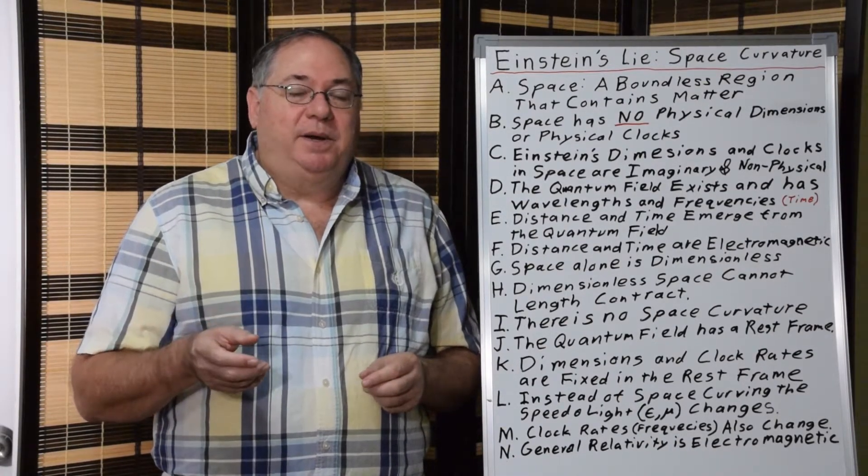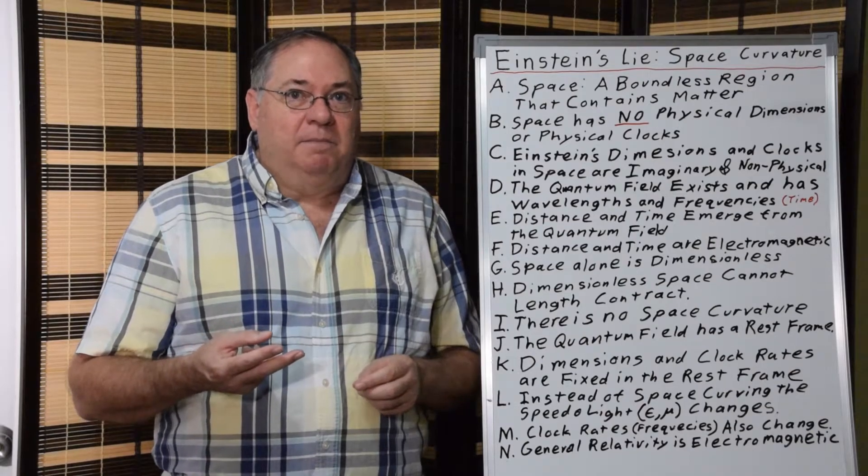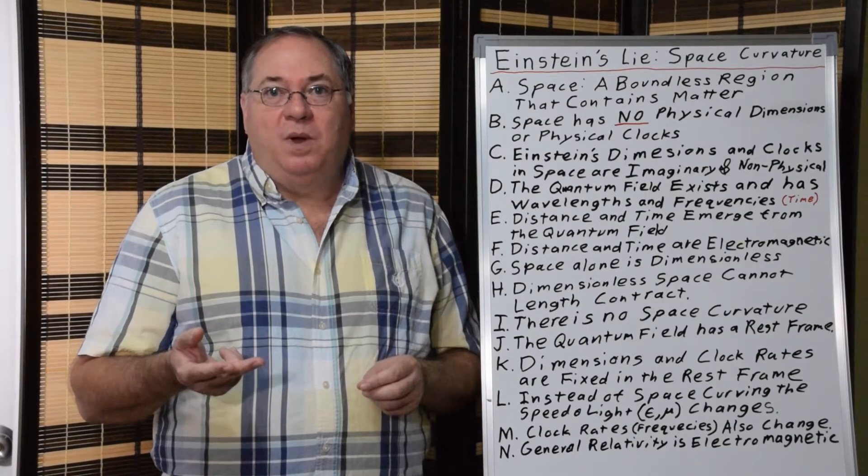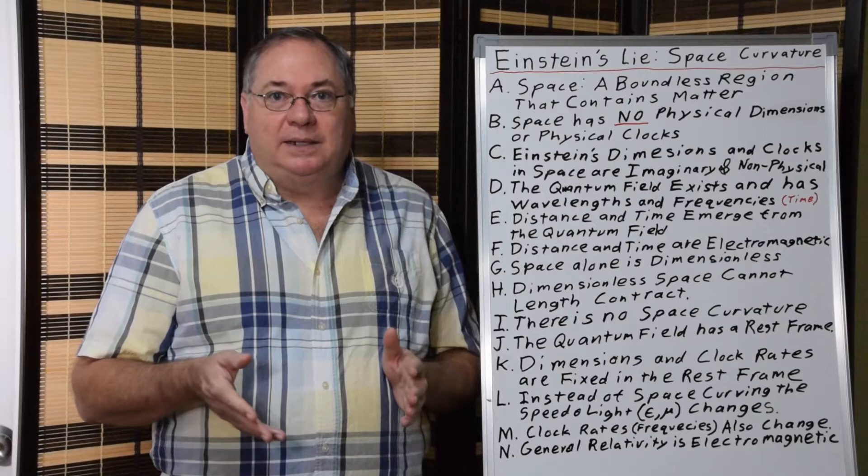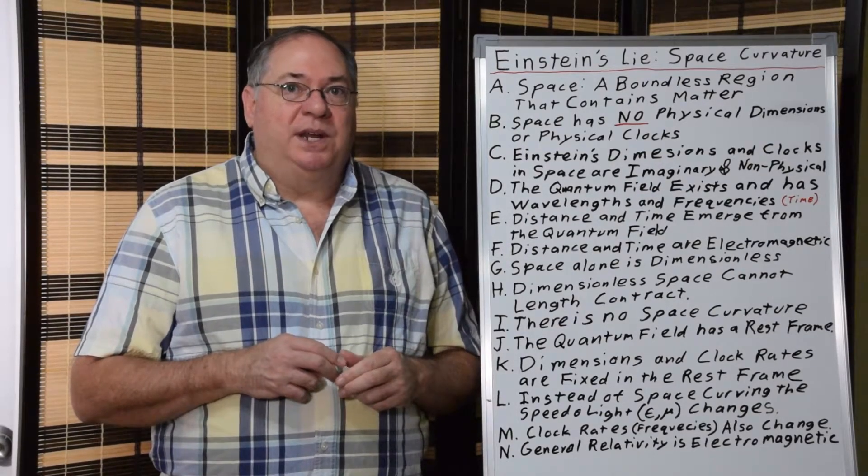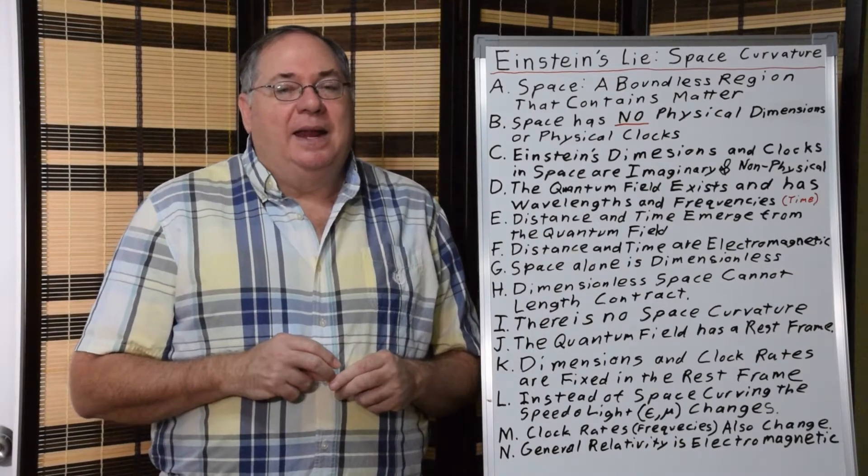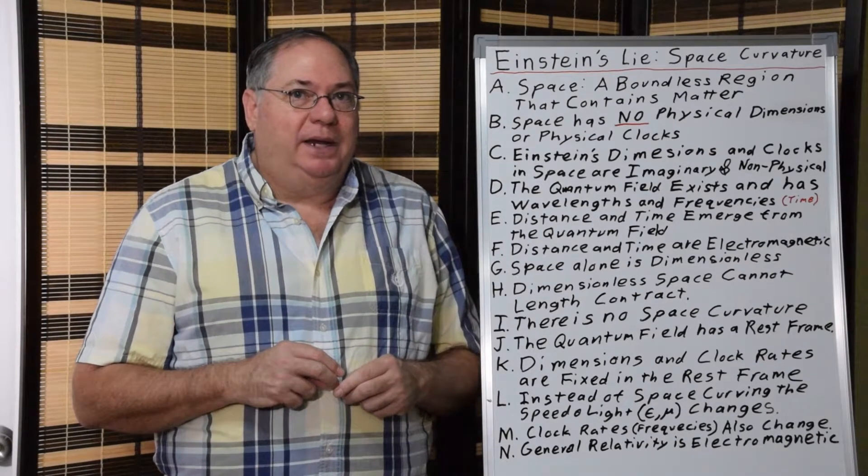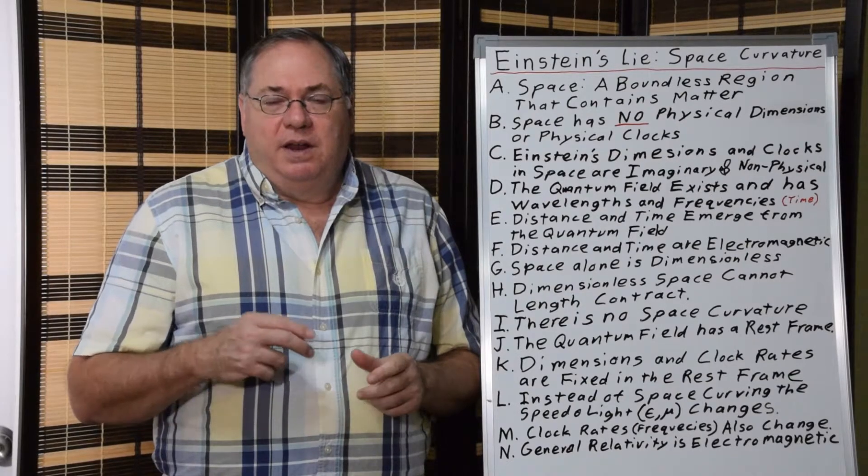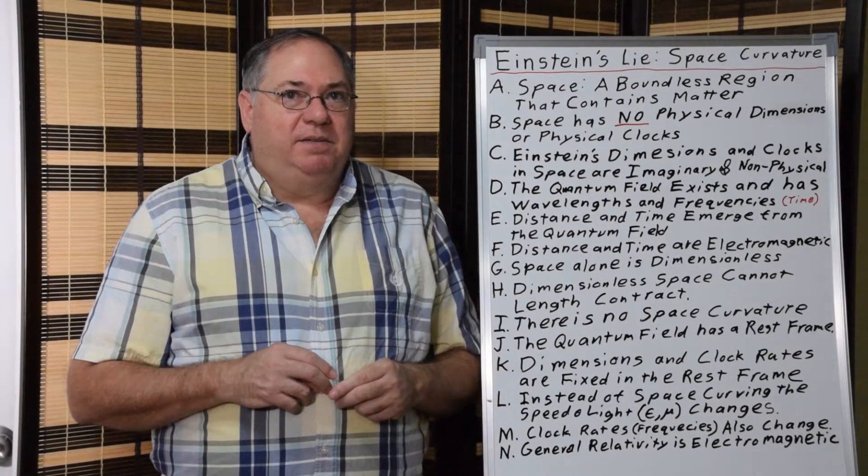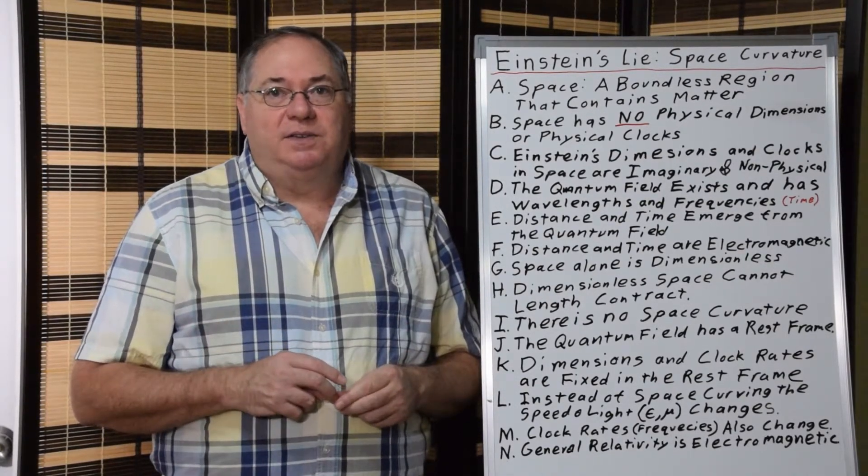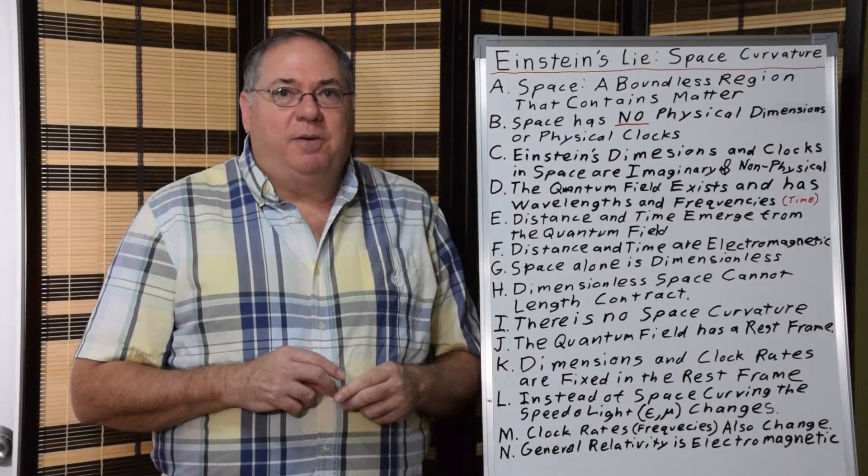So the light experiences two forms of delay due to the wavelength being more compact and the speed of light slowing which gives the Shapiro delay. And in this way it's possible to explain all the photon based general relativistic effects quite simply as electromagnetic phenomena.